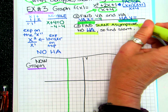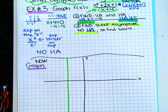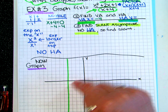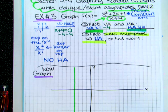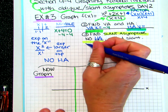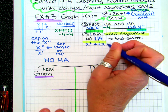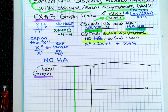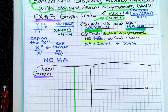Instead, we have what's called a slant asymptote. A slant asymptote is exactly like it sounds — it's an asymptote, another invisible line, but it's going to be slanted. It's going to look like a linear line with a slope to it. The way we find it is we use division. We take the top — x squared plus 2x plus 1 — and we divide it by x plus 4. We're going to use what's called synthetic division. It doesn't go in evenly.